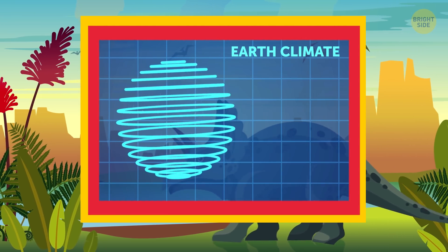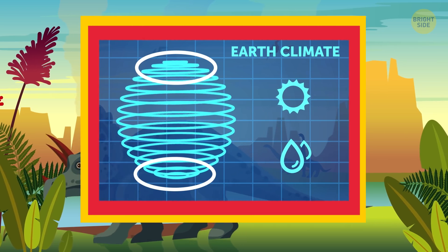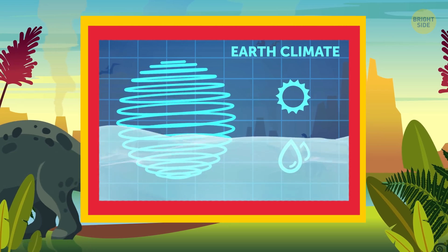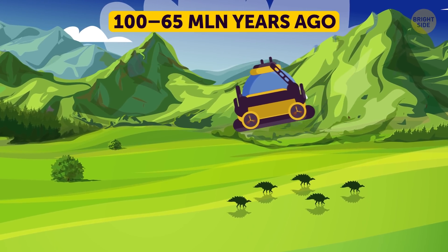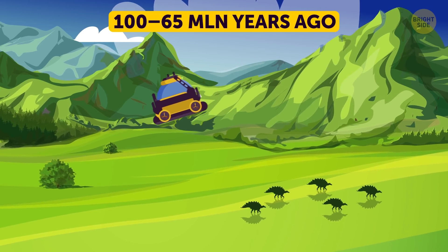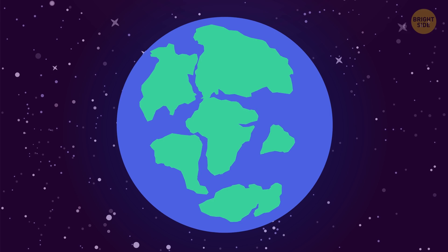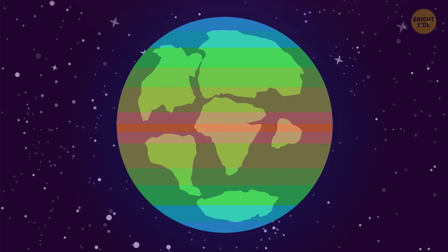The climate during their rule is pretty hot and humid. There are no polar caps at this time. They've melted, which causes a rise in global sea levels. From 100 to 65 million years ago, the planet goes through so many changes. The single landmass is breaking apart into the continents we have today. The climate is becoming more regional and seasonal, cold at the poles, and warmer toward the equator.